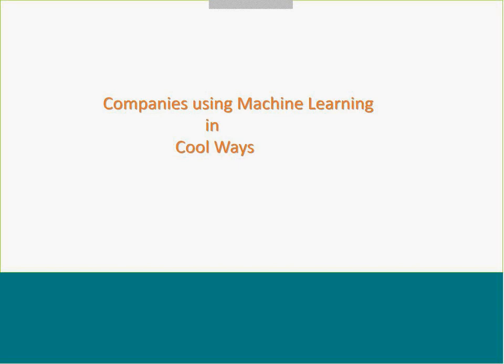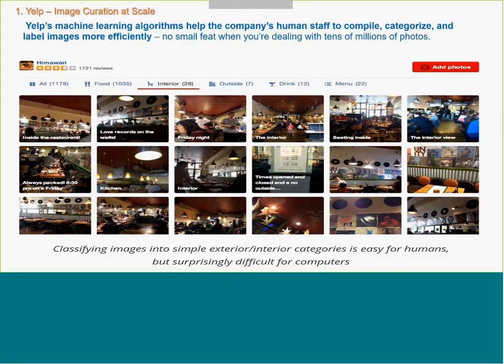Before that, I would like to cover companies that are using machine learning in interesting ways. One website captures images and tags them — whether it's interior, exterior, or kitchen-related. If you have 10, 20, or 100 images it's easy to identify, but if you have tens of millions of JPGs, you can tag them using a machine learning algorithm. It achieves this with 95% accuracy.